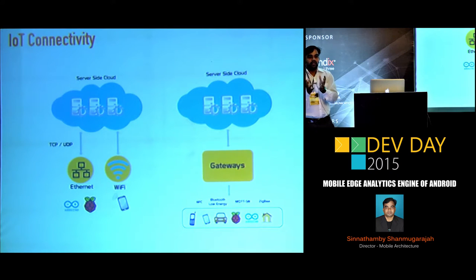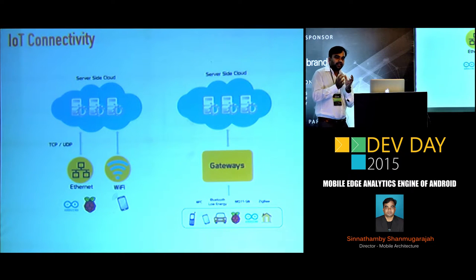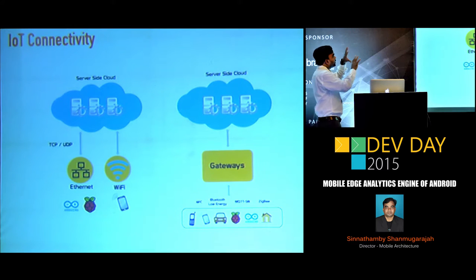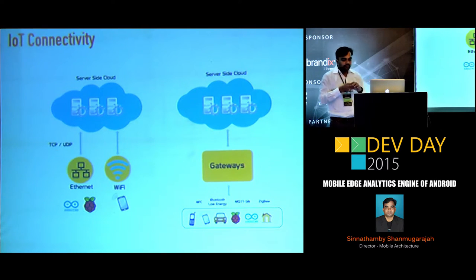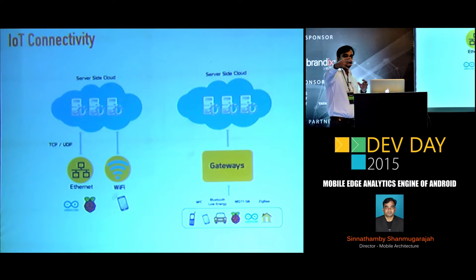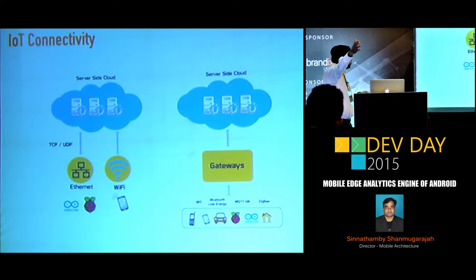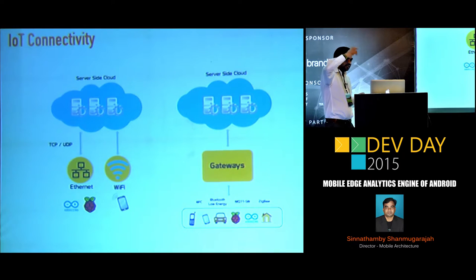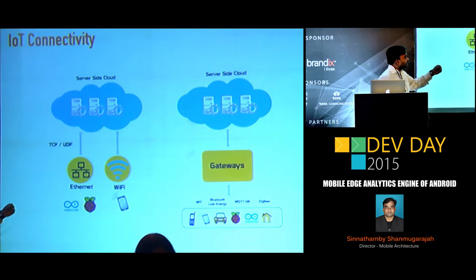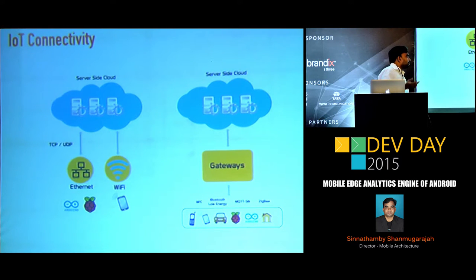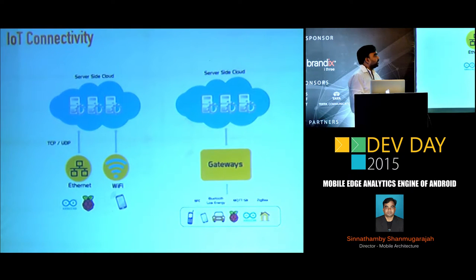Now let's see about IoT connectivity. Some devices cannot connect directly to the cloud — they need a gateway. Data goes from IoT devices through a gateway to the cloud. Other devices can connect directly. From device to gateway, the connectivity can use NFC, Bluetooth Low Energy, MQTT, Zigbee, and many other technologies.